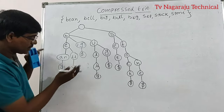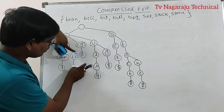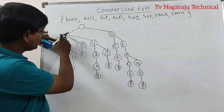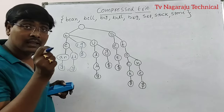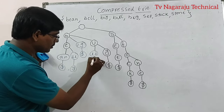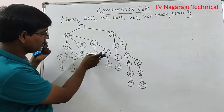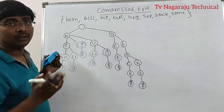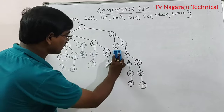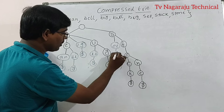For big, I and G have only one path, so combine I-G into a single node with dollar. For bull and bug, the L-L branch and G branch under U are separate — so L-L stays as combined L-L, and G stays separate. For set, E and T can be combined into E-T.